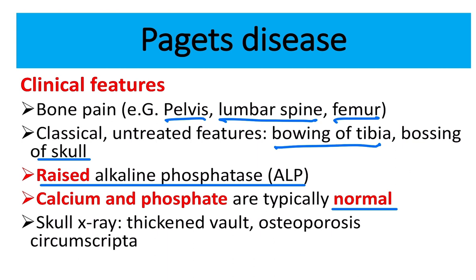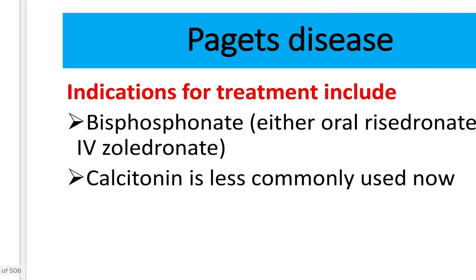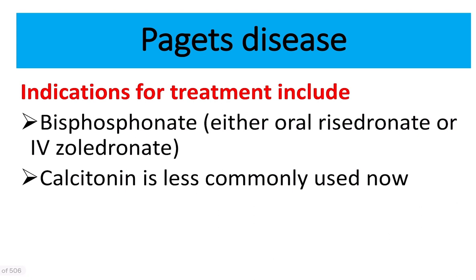On skull X-ray, thickened bone, osteoporosis circumscripta may be present. The treatment options are bisphosphonates, either oral risedronate or IV zoledronate. Calcitonin is less commonly used because there is no calcium abnormality — the only abnormality is in bone formation.